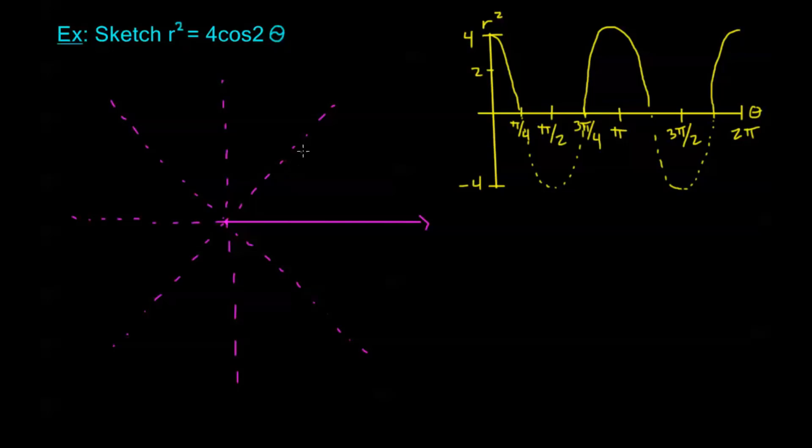And the one last thing to notice, remember last time I had mentioned that r² is equal to 4 here on my reference graph. So when I'm graphing my actual polar equation, wherever I have r² equals 4 on my polar graph, I only have r is equal to 2. Whenever I have r² equals 0, I still have r is equal to 0. So we'll be a little bit forgiving there. And we are ready to graph.